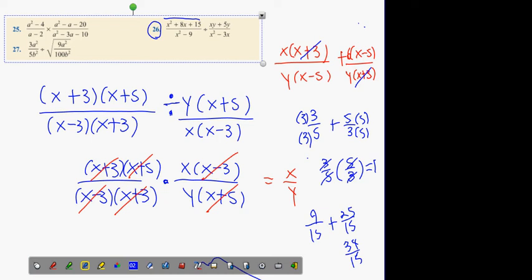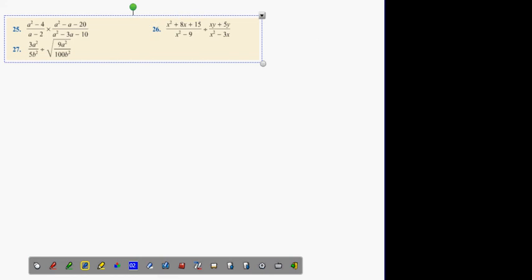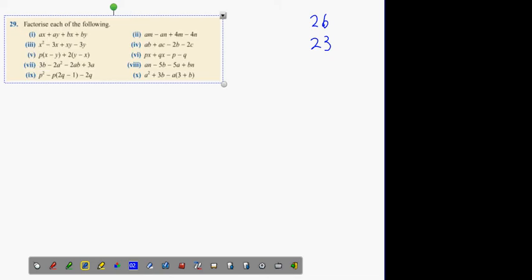What's my next question then? I've done 26 and 23. What's my next one? 29. Are you sure we don't want anything done in 29? Number 10. 29 part 10? Perfect, thank you. Any other ones?